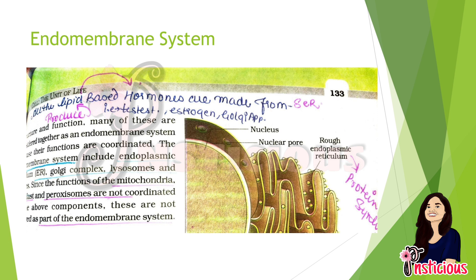An important extra point: all lipid-based hormones are made by the SER, which is the smooth endoplasmic reticulum — for example, estrogens. The rough endoplasmic reticulum helps in protein synthesis. The ER was first observed in electron microscopic studies of eukaryotic cells.